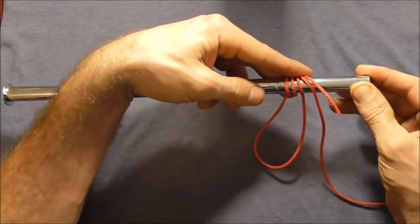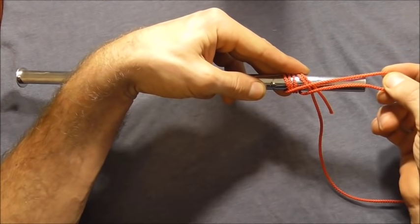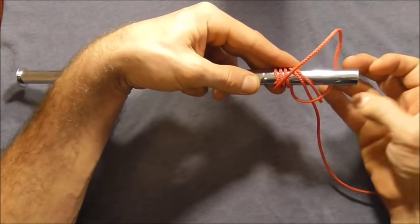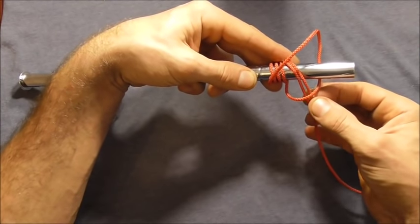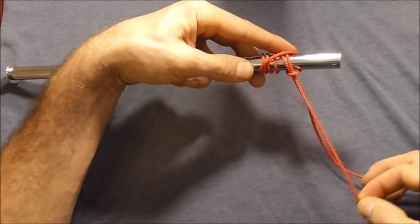I'm going to move this closer to the end here. I'm going to take this loop, feed it around the end and then take the slack out of that loop by pulling on this tag end.